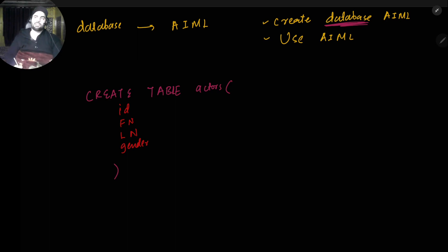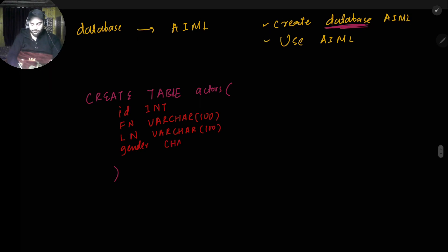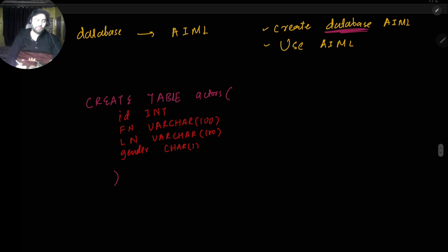Now about constraints and data types from the previous lecture. We declare data types for each attribute: id will be INT, first_name will be VARCHAR(100), last_name will be VARCHAR(100), and gender will be CHAR(1). Now we add constraints: id should NOT NULL because every record must have an id. First_name, last_name, and gender can be null by default — someone may have only a first name or not specify their gender.